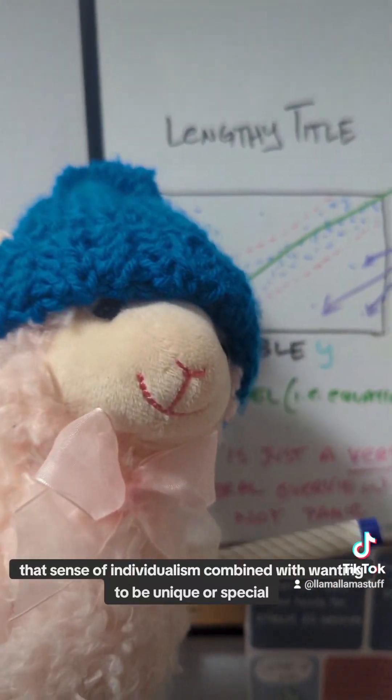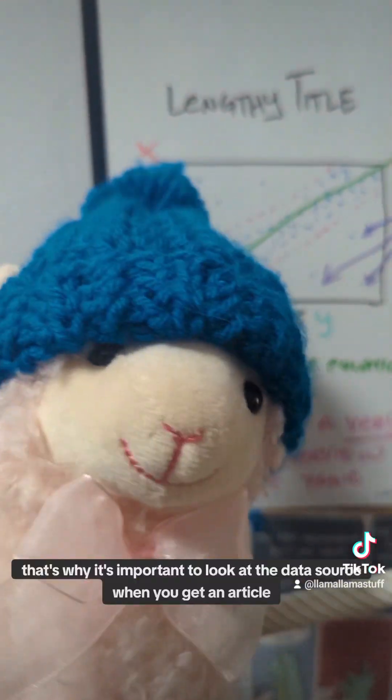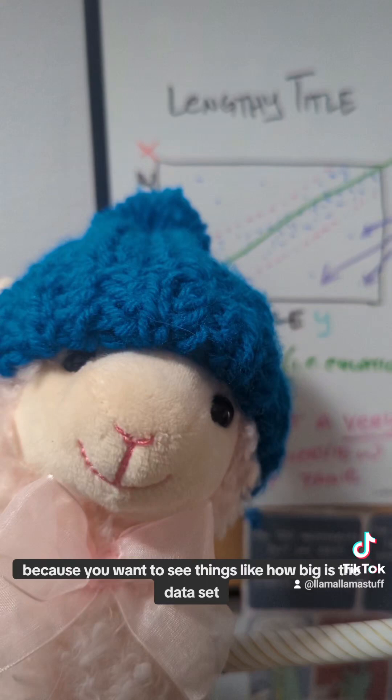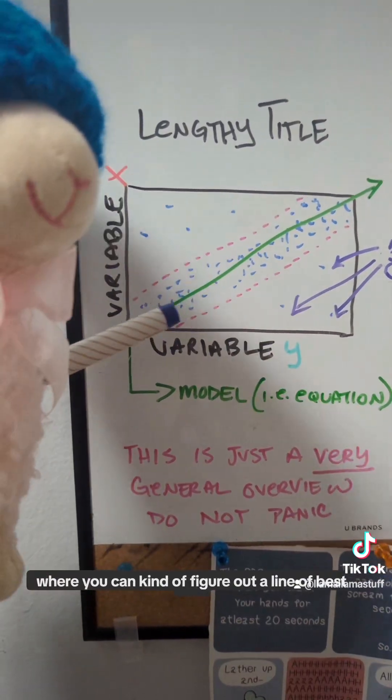This is completely my theory, but I think the reason this is a bit of a problem in the U.S. is everyone wants to think that they're the outlier or they're the exception. That sense of individualism combined with wanting to be unique or special I think is what makes people want to be that outlier.